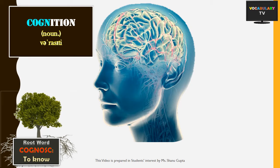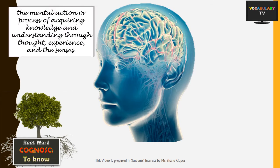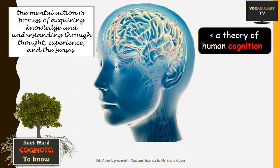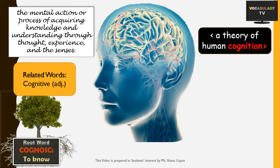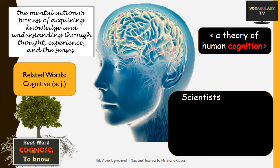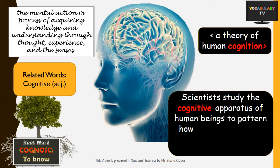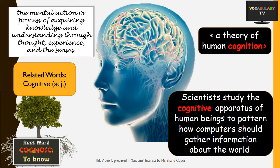Next we have a very important word: 'cognition'. Simply put, cognition refers to our conscious mental activities involving knowing, learning, thinking, and understanding. For example: theories of human cognition. Anything related to cognition can be described as 'cognitive', which is an adjective. For example: scientists study the cognitive apparatus of human beings to pattern how computers should gather information about the world.